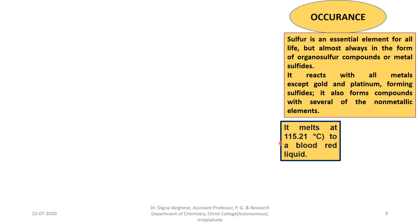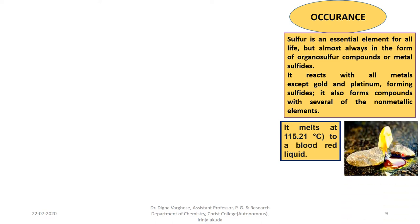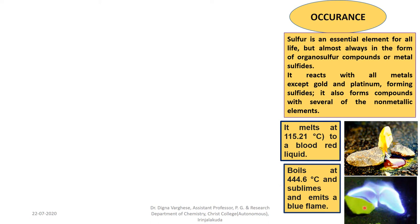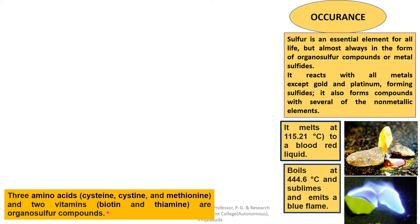Sulphur melts at 115.21°C to a blood-red liquid, and boils at 444.6°C, subliming easily and emitting a blue flame. Sulphur is an essential element for all life. Three amino acids — cysteine and methionine — and two vitamins — biotin and thiamine — are organosulphur compounds.